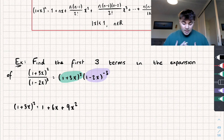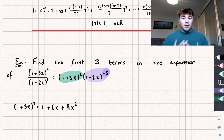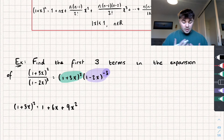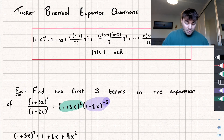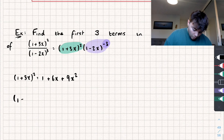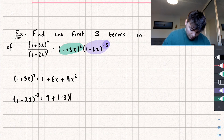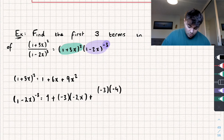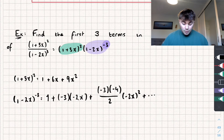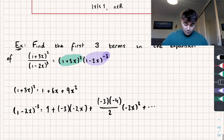Now we're going to expand the second part. As we have a negative power of n — negative three — this is going to be an infinite sum when we expand it. Because we're only interested in the first three terms, I'm only going to expand up to the x² term. Using the formula, we're expanding (1-2x)⁻³ with n = -3 and x = -2x. So it's 1 + (-3)(-2x) + [(-3)(-4)/2!](-2x)² + ...